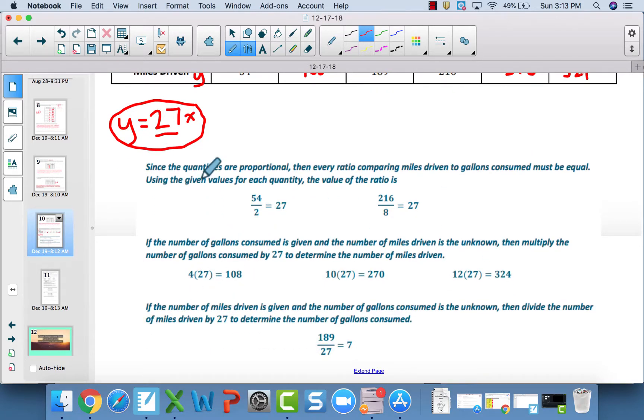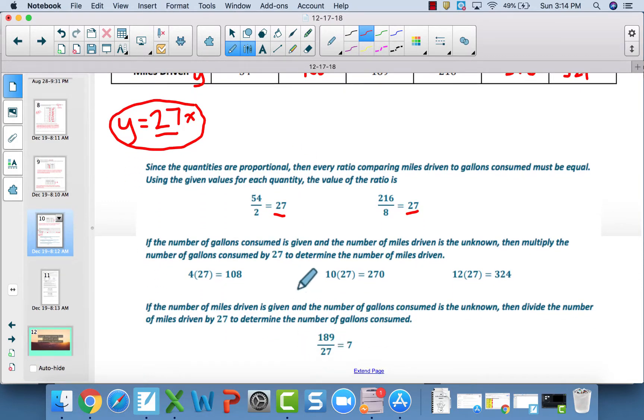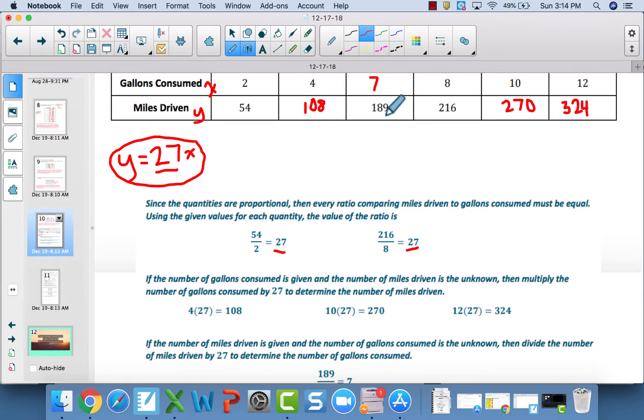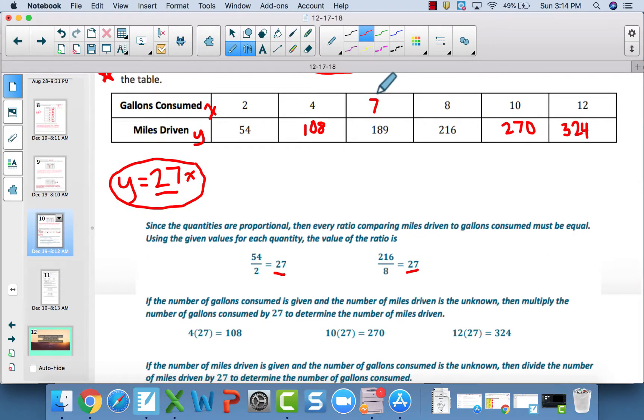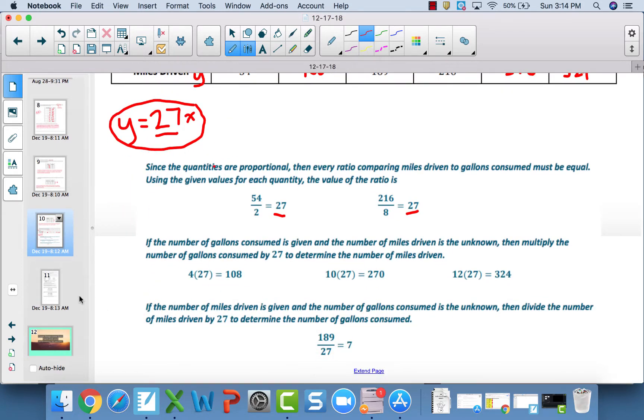Down here in blue is some additional information. If you are struggling, it is not necessary to write this down unless you feel like you need additional notes. Because the quantities are proportional, we can divide to find the value of the ratio, which is that constant of proportionality. 54 divided by 2 gets 27. So that tells you, you need to multiply 2 times 27 to get 54. If the number of gallons are given, you multiply it by 27 to get the miles. On the other hand, when you're given the miles driven, you're working backwards, you divide by 27. To get from y to x, you divide by 27. To get from x to y, you multiply by 27.